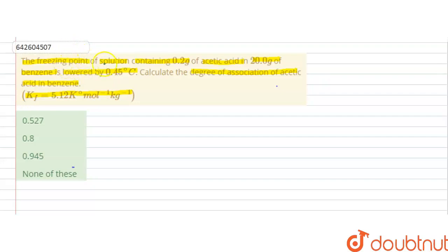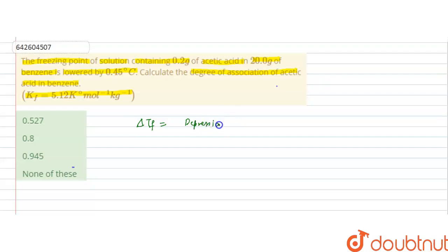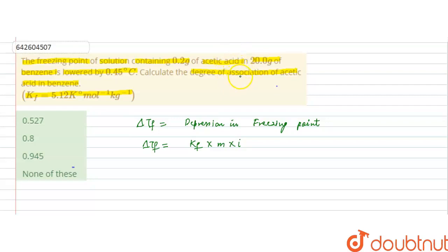In this question, we are given the freezing point of a solution of 0.2 gram acetic acid in 20 gram of benzene, lowered by 0.45 degree Celsius. We have to calculate the degree of association of acetic acid. The depression in freezing point is equal to Kf into molality into i, that is the Van't Hoff factor.